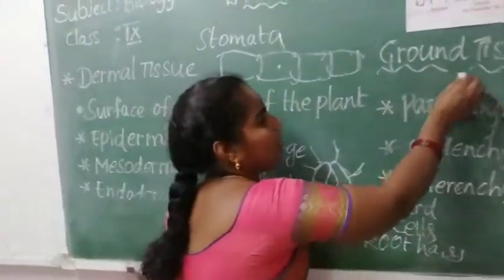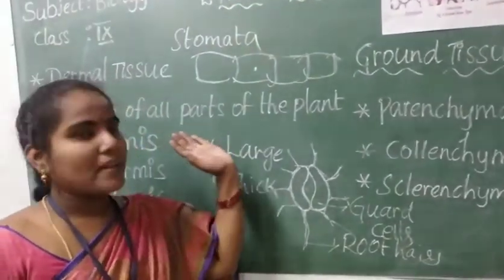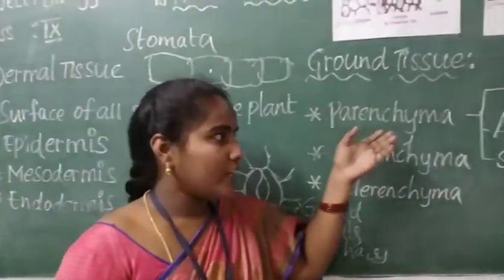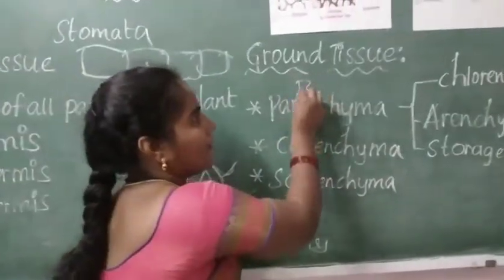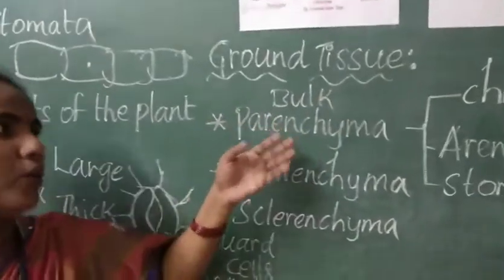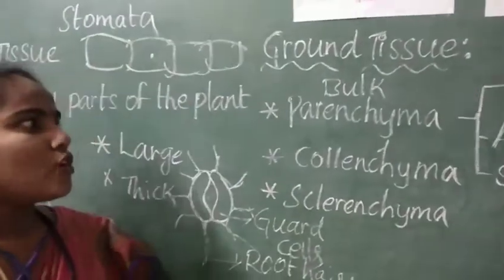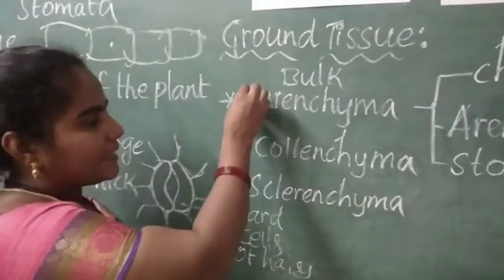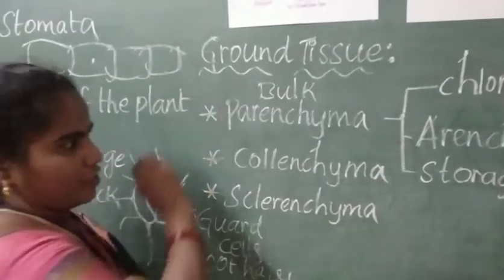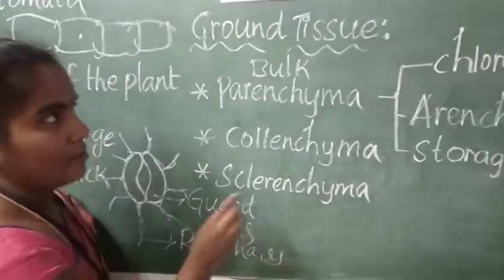Now let's come to the ground tissue. The dermal tissue is present over all the surface of the body, whereas the ground tissue gives the bulk of the plant body — meaning we find ground tissue in the greatest amount in the plant body. We find three types of tissues in the ground tissue: parenchyma, colenchyma, and sclerenchyma.